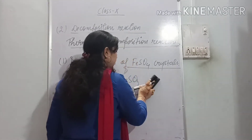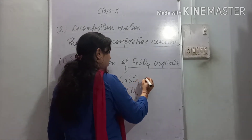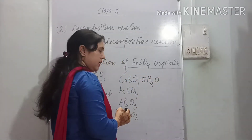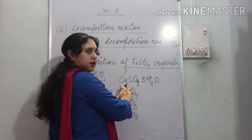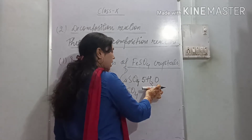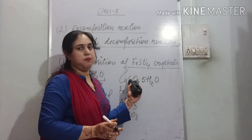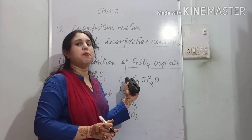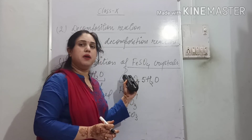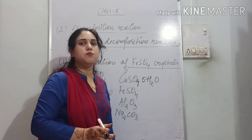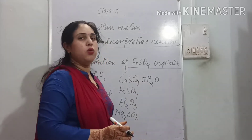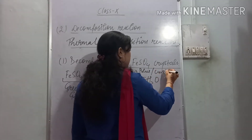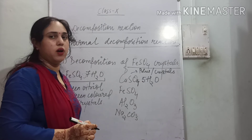Now take copper sulfate as an example. It is in crystal form because a certain amount of water is physically attached to it. So CuSO4·5H2O means one molecule of copper sulfate has 5 molecules of water physically attached — not chemically. Copper sulfate's chemical formula and chemical properties do not change, but its physical appearance changes due to the presence of these water molecules. Due to these water molecules, copper sulfate appears as blue crystals.